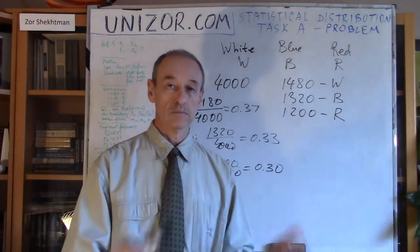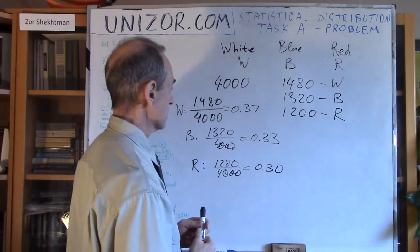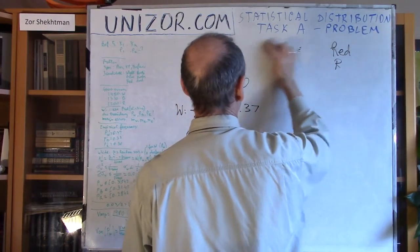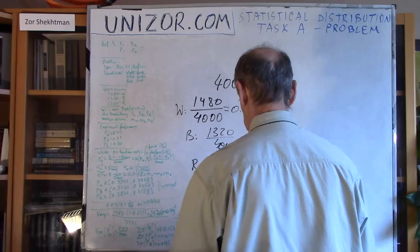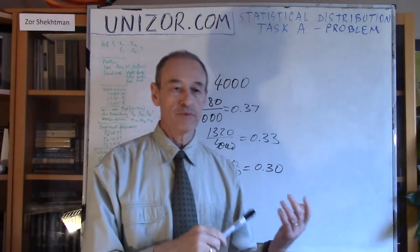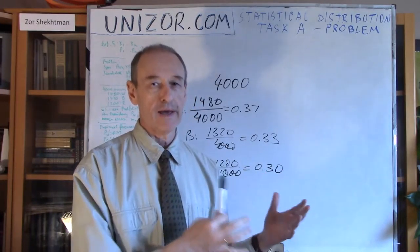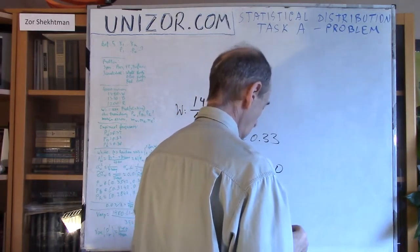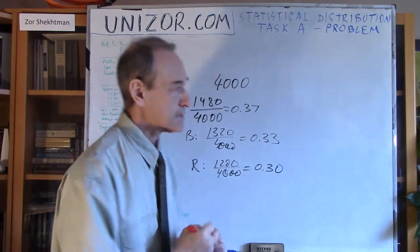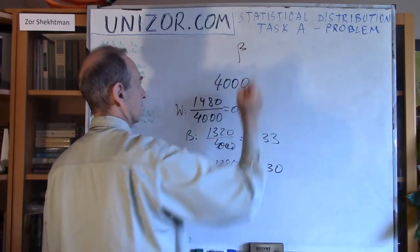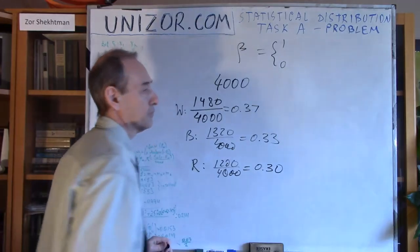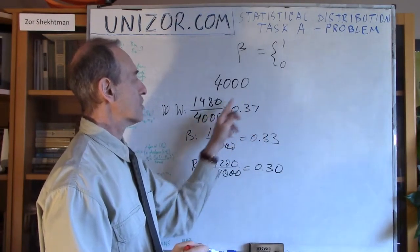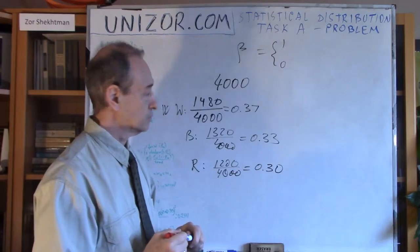Now the question is: what are the margins of errors in these cases? Here's how we can calculate that. I can refer to the previous lecture for the formula, but I'd like to remind you of the derivation. Here's how we will approach it. Let's introduce a new random variable beta, which is equal to 1 or 0. I'm talking right now only about the white party candidate, and I would like to evaluate the margin of error of this particular probability, 0.37.